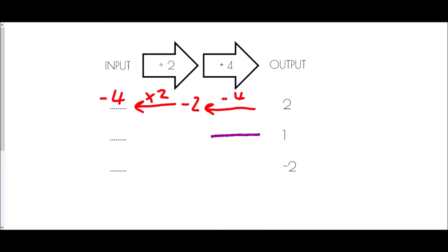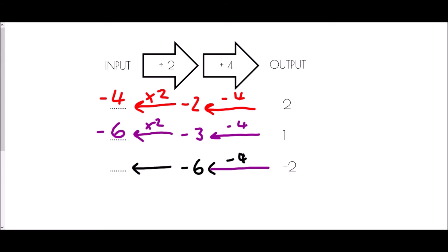If the output is one: subtract four — one take away four is negative three — then multiply by two, so negative three times two is negative six. In the last one, output is negative two: negative two take away four is negative six, then negative six times two is negative twelve.